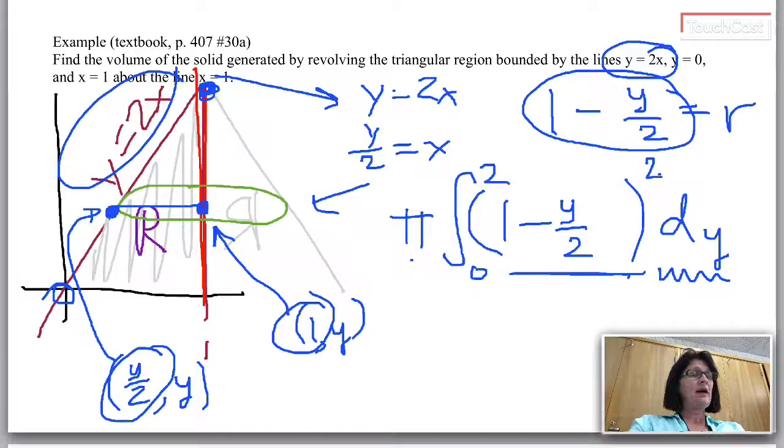I would expect on the AP test they would not ask you to evaluate this integral. If they did ask you to evaluate this integral, notice your fastest bet here is to multiply out 1 minus y over 2 times 1 minus y over 2. Make your four multiplications. Foil, right? And then you're integrating a polynomial function.